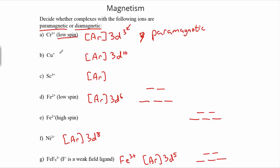So if we take a look at copper plus now, 3d¹⁰, that means that the d-orbitals are completely filled, which means they're all paired up. And so this is going to be diamagnetic instead.